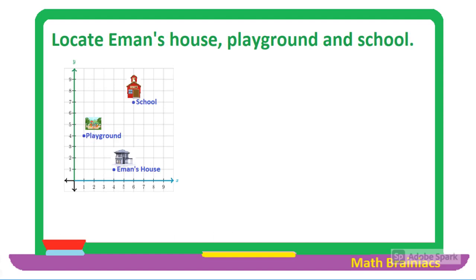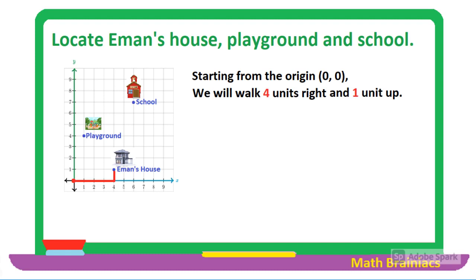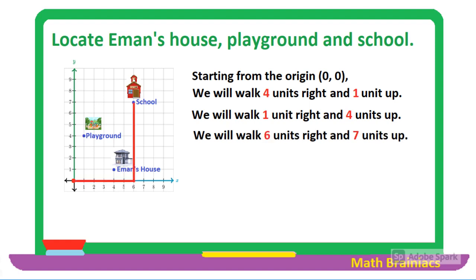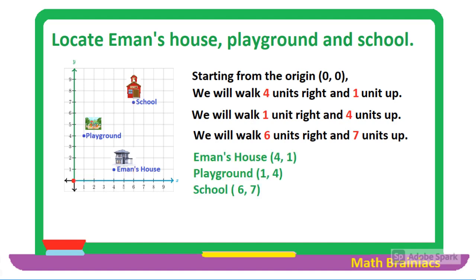Let us apply our lesson in a real-life situation. Instead of using GPS, we're going to use the coordinate plane to locate Iman's house, playground, and school. Starting from the origin, we walk four units to the right and one unit up — that is Iman's house. For the playground, starting from the origin, we walk one unit right and four units up. For the school, we walk six units right and seven units up. The ordered pair of Iman's house is (4, 1), the playground is (1, 4), and the school is (6, 7).